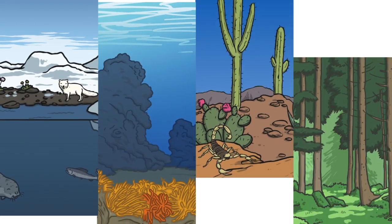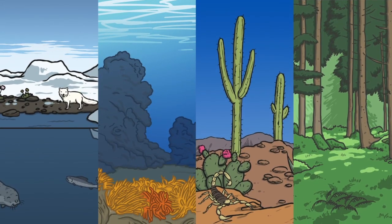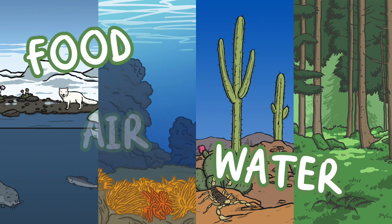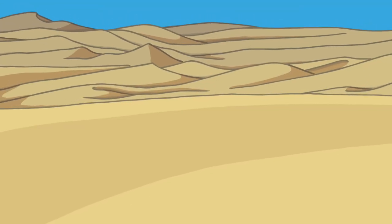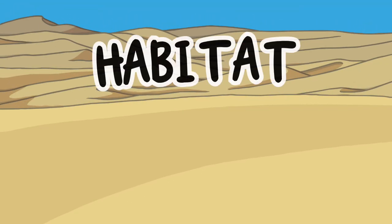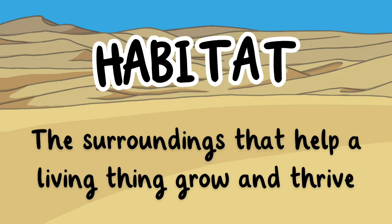A habitat is the natural environment where a plant, animal, or other organism lives. It provides everything a living thing needs to survive: food, water, air, and shelter. In science, this is called the habitat definition in biology. It's all about the surroundings that help a living thing grow and thrive.